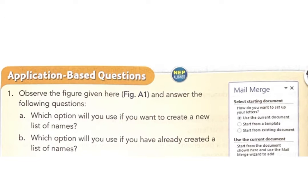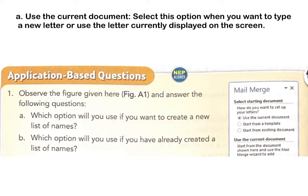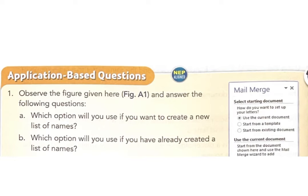Application-based questions. A: Observe the figure given here and answer the following questions. A: Which option will you use if you want to create a new list of names? Answer: Use the current document — select this option when you want to type a new letter or use the letter currently displayed on the screen. B: Which option will you use if you have already created a list of names? Answer: Start from existing document — this option is suitable when you plan to reuse an old letter.